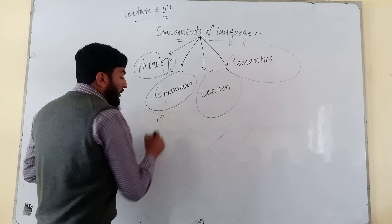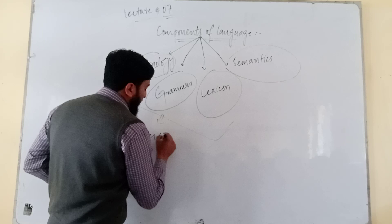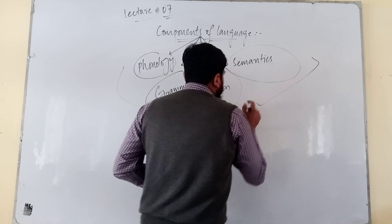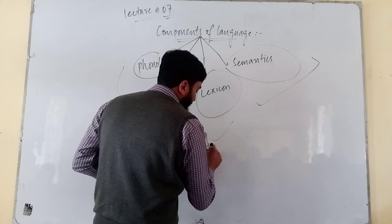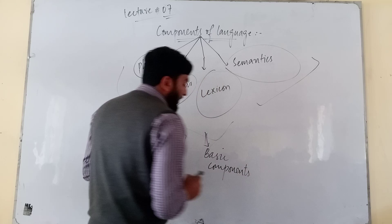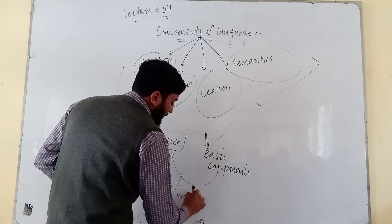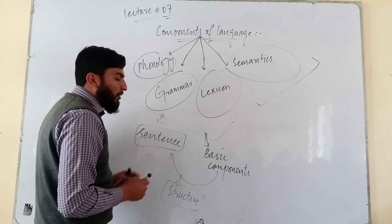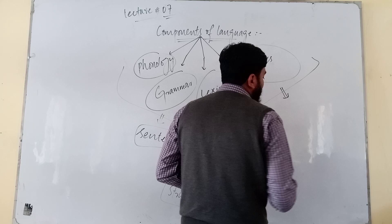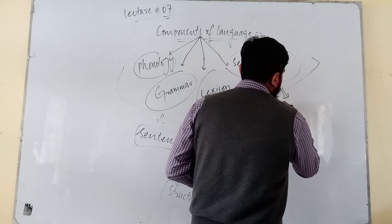Phonology, grammar, and lexicon — what role do they play? They formulate a sentence; they form a sentence. These three are the basic components of language, and they play their role in the formation of a sentence, so their role is seen in the structure. The last one, semantics, is not called the basic component, because semantics is the study of meaning and it changes.